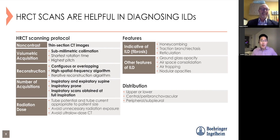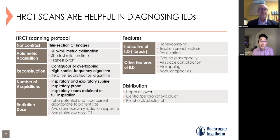Before talking about what ILD looks like on HRCT, you need to know what HRCT is—high resolution chest CT. There are four key differences from a regular chest CT. First, you reconstruct images very thinly, around one millimeter or sub-millimeter. The reason is to get the best in-plane axial resolution. A regular chest CT uses two-and-a-half to three millimeters, but HRCT requires those one-millimeter cuts.